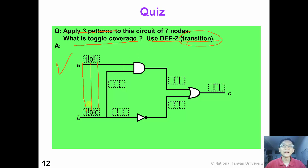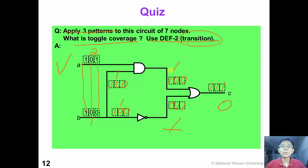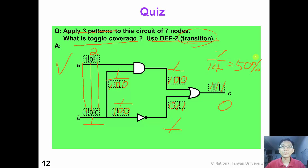Okay, have you finished? We can fill in the logic values. For the three patterns we get node values of (1,0,0), (0,1,1), and (1,0,0), giving outputs of (1,1,1). Now we count the transitions: two transitions on one node, two transitions on another, then one, one, one, one, one, and zero transitions on the last node. Totally we have seven transitions over 14, so the toggle coverage is 50%. Have you got it correctly?